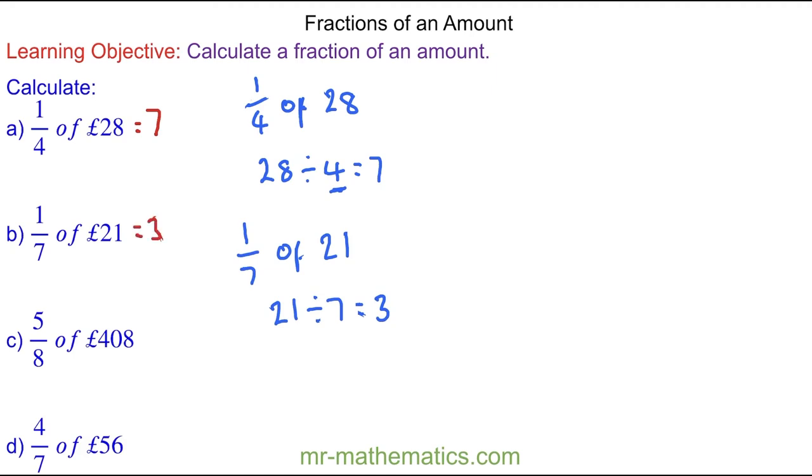For question C, we have five eighths of 408. So to work out five eighths, we're going to work out first of all one eighth. And then we'll multiply this answer by five. And that will give us five eighths.